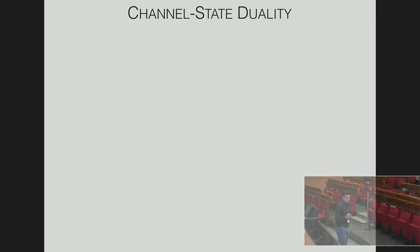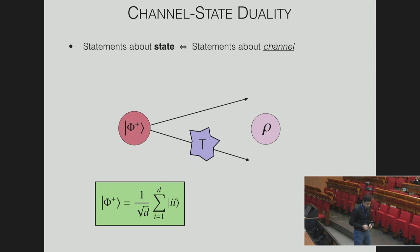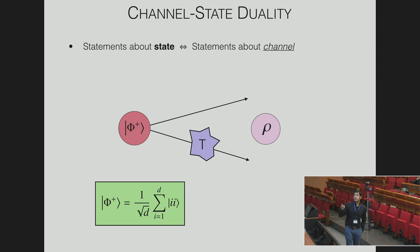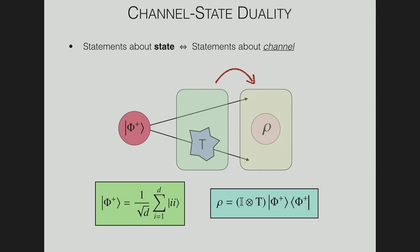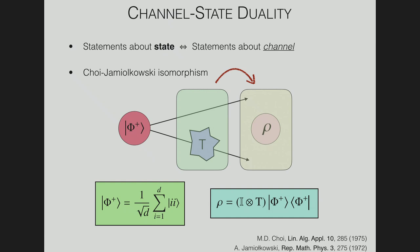In quantum mechanics, we have channel-state duality, which says that statements about a state can be mapped to statements about a channel. If you have a maximally entangled state — the 1/√d ∑|i,i⟩ state — and you put one particle through a complex medium, the resulting state ρ captures all the information about T. The math looks like this: ρ equals identity tensor T. The identity acts on one particle and T acts on the other, and the resulting state ρ encodes T. This is called the Choi-Jamiołkowski isomorphism, proposed independently by these two theorists in the 1970s.